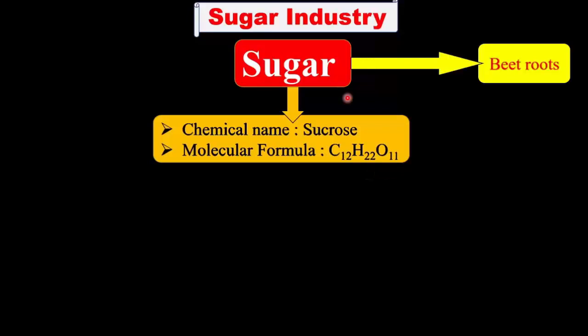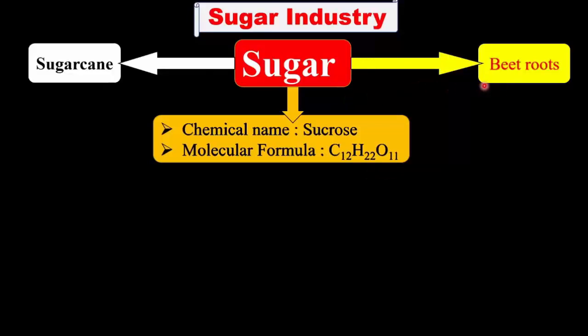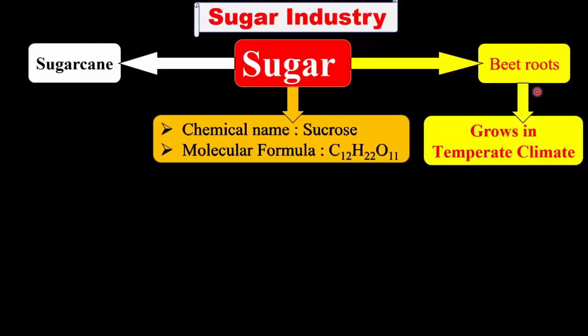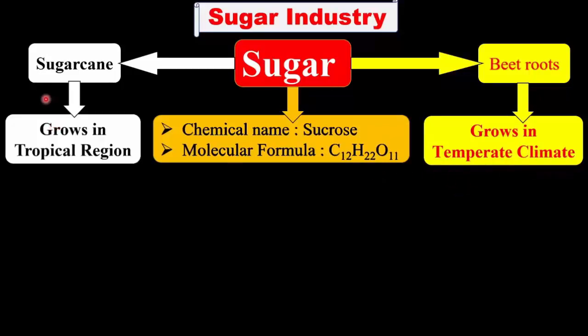This sugar is produced from two natural sources: one is beetroot and another is sugarcane. Beetroot abundantly grows in the temperate climate, while sugarcane grows in the tropical region.